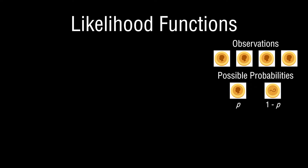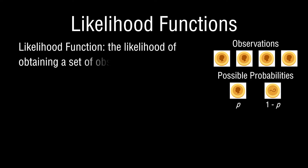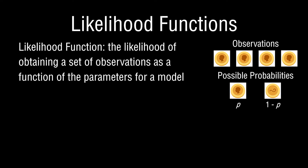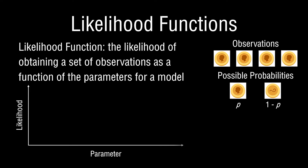Now that we understand the context, let's introduce the likelihood function. A likelihood function represents the likelihood of obtaining a set of observations as a function of the parameters for the underlying model. In other words, if we vary the parameter p, how likely would it have been that we observed what we observed? On the y-axis we represent the likelihood of the outcomes observed as a function of the parameter p.